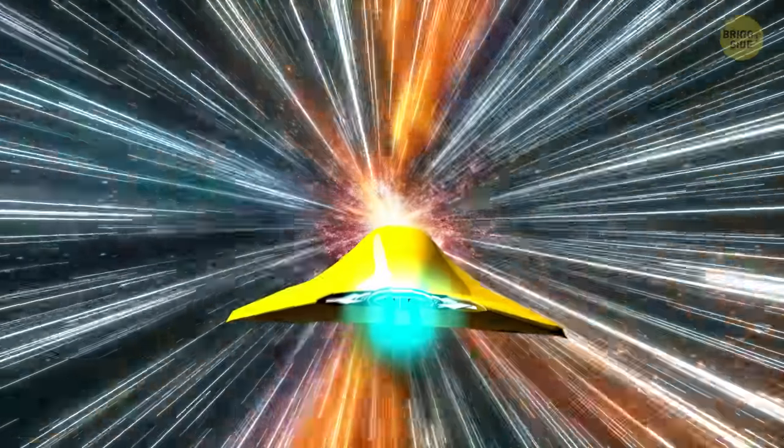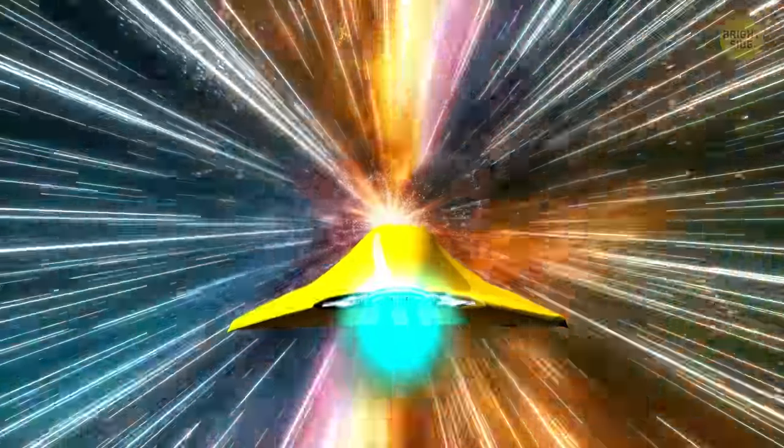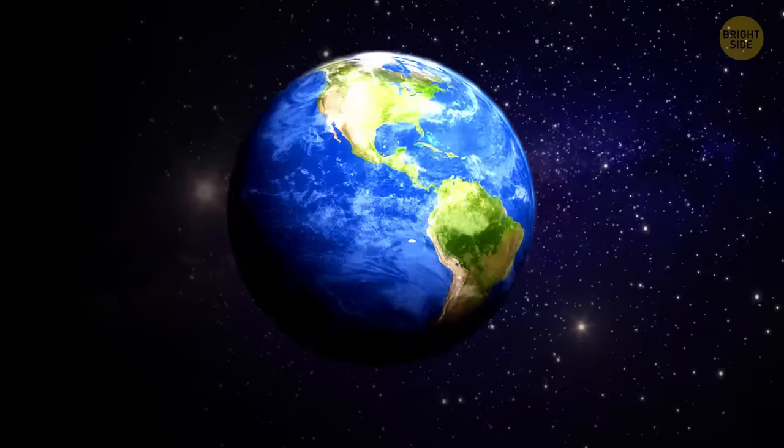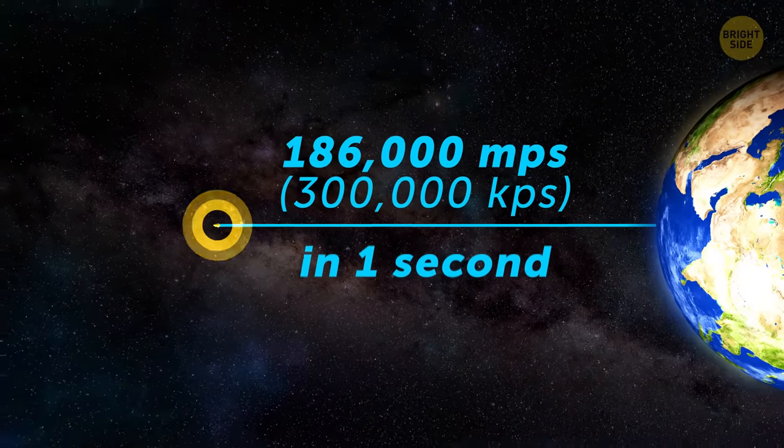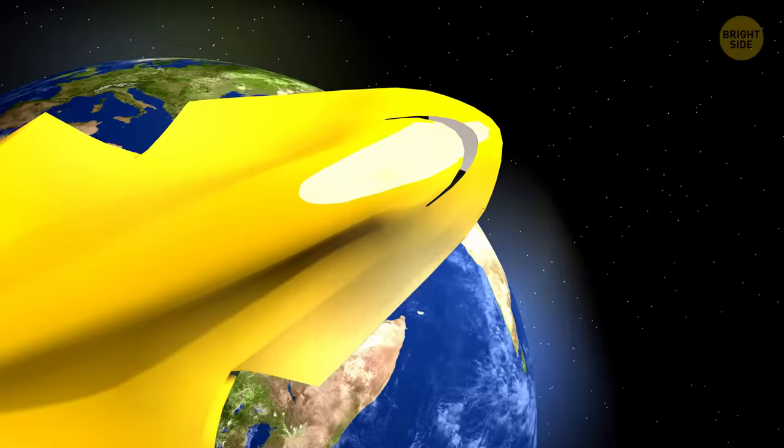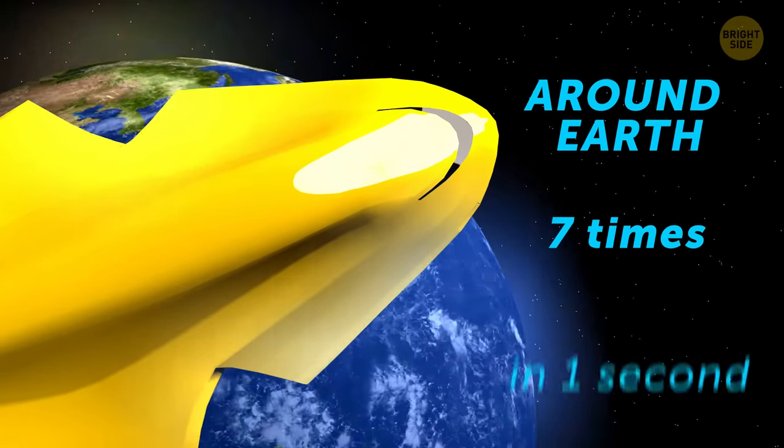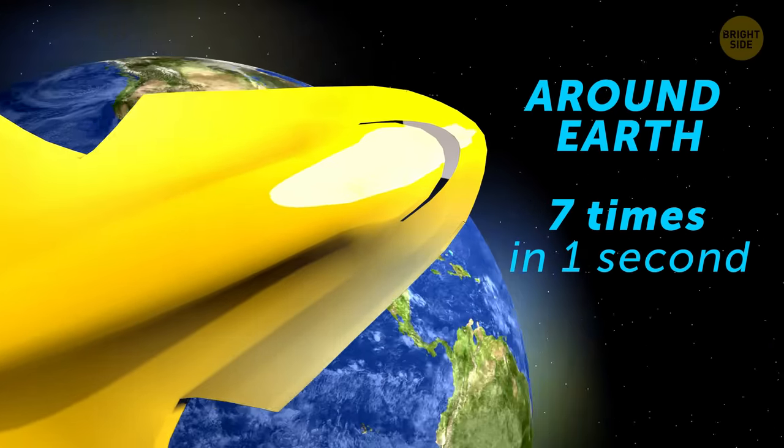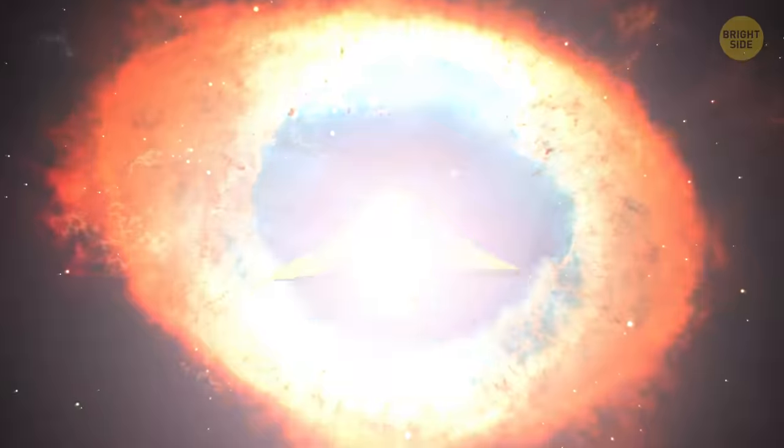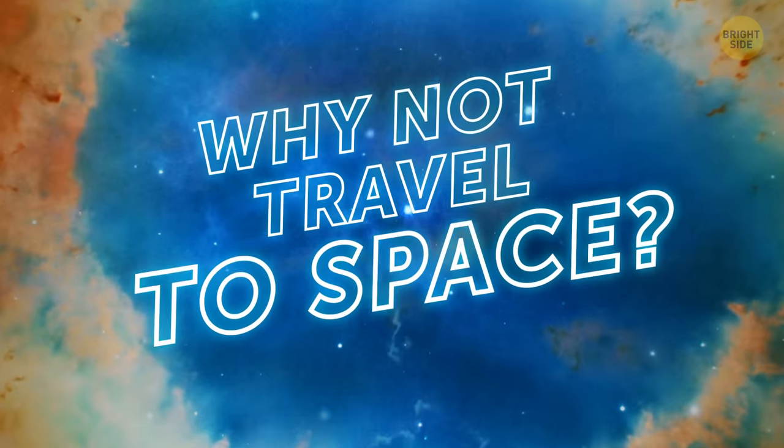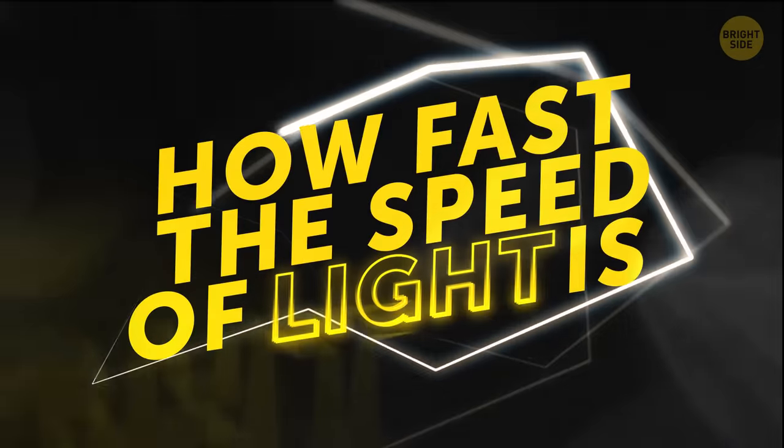Imagine being able to travel at the speed of light. Really short commute, huh? But think of this: you travel 186,000 miles in just one second. In other words, it would take you just a second to go around Earth seven and a half times. It seems like an awful waste of endless opportunities to me. Why not travel to space? But first things first, let's figure out how fast the speed of light is.